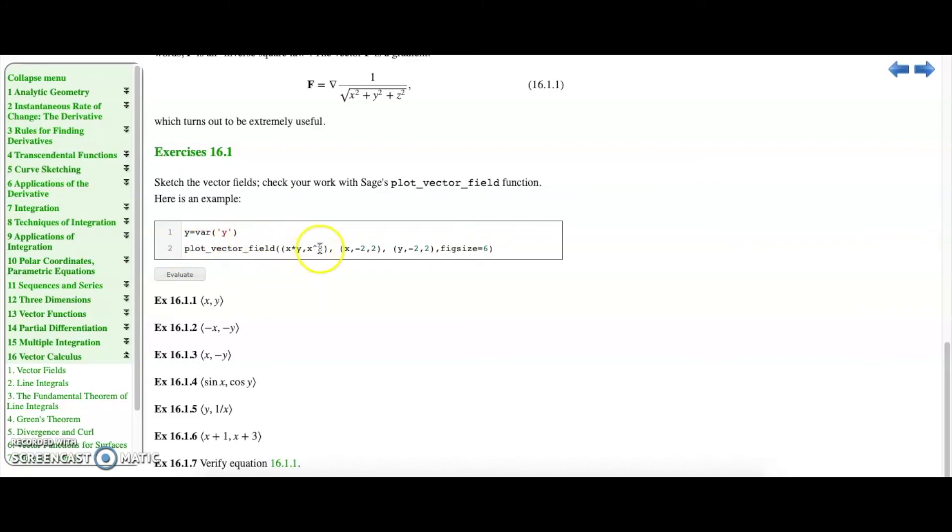All we do is utilize the plot_vector_field function. It next asks you for the definition of the vector field and then the ranges for the x and y value. And then fig_size controls the density of the arrows. So if you increase or decrease that you get more arrows. Let's take a look at the field we just did: x and y for the y coordinate and then we evaluate.